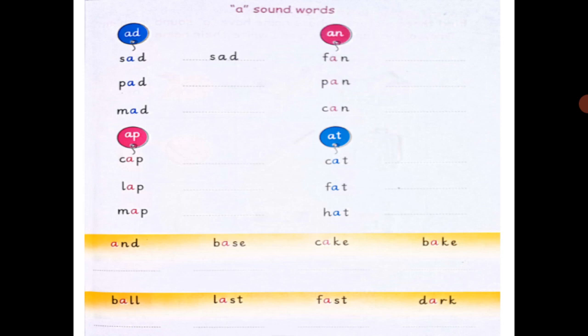B-A-S-E, base. C-A-K-E, cake. B-A-K-E, bake. B-A-L-L, ball. L-A-S-T, last. F-A-S-T, fast. D-A-R-K, dark. یہ آپ کا آج کا homework ہے جو آپ اس پہ کریں گے بک پہ.